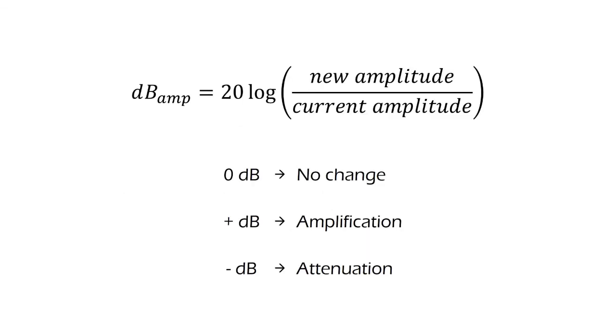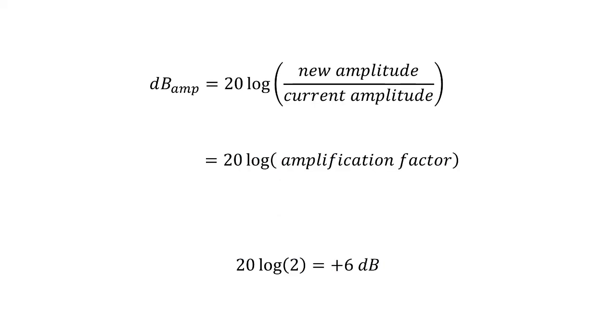In amplification, decibels are referenced to the current amplitude, so amplifying by 0 decibels causes no change in the wave, adding decibels amplifies the wave, and subtracting decibels attenuates the wave. In this case, it is actually easier to introduce the multiplication factor directly into the logarithm without the need to use the current amplitude as a reference.